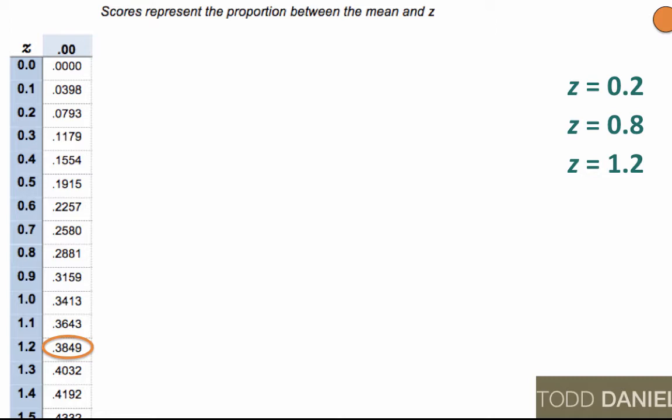You may notice that I left off the positive or negative sign for these z-scores. I want you to understand that the proportion of scores between the mean and a z of positive 1.2 is exactly the same proportion as between the mean and negative 1.2.